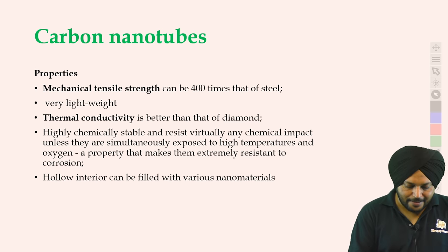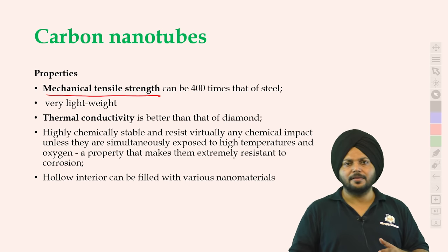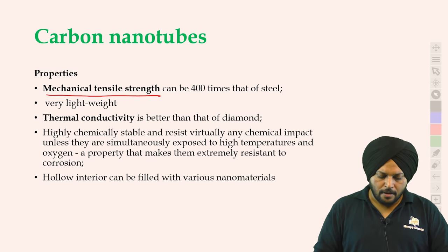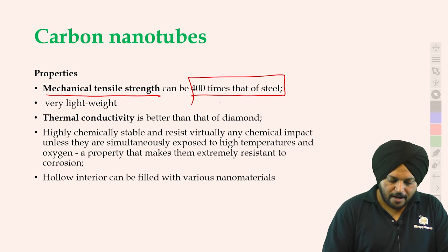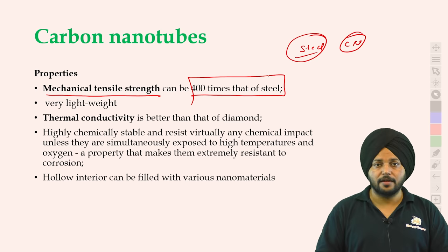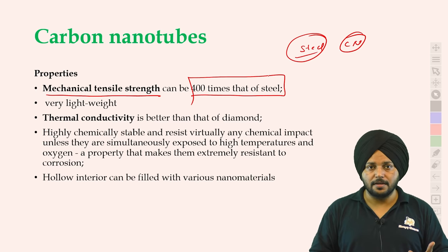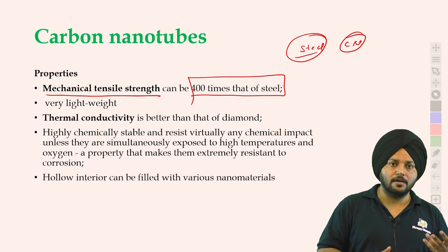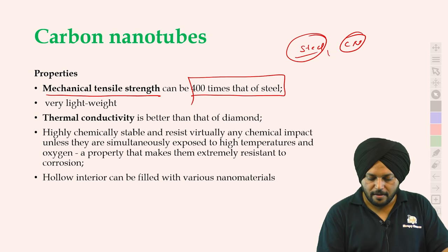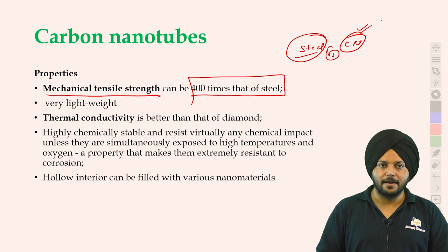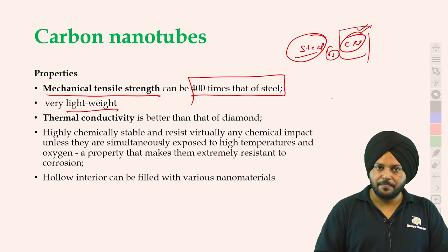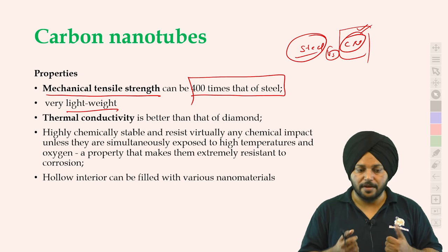Carbon nanotube की properties one by one देखते हैं। Mechanical tensile strength — basically अगर मैं बात करूं tensile strength की, तो इसको easily आप break नहीं कर पाते। यह can be four times that of steel। मतलब अगर एक side पर steel हो, तो दूसरी side पर carbon nanotube — steel thick भी है। Carbon nanotube light weight भी है और इसकी strength बहुत ज़्यादा है, आप इसको break भी नहीं कर सकते।